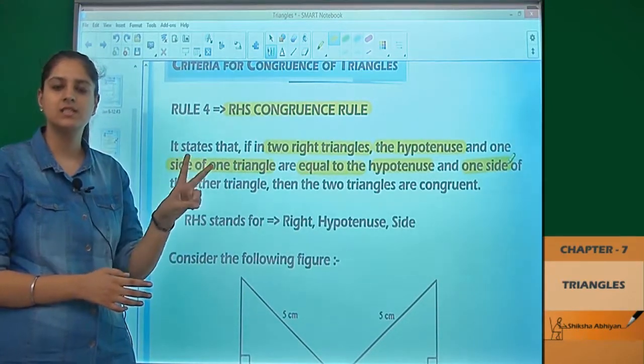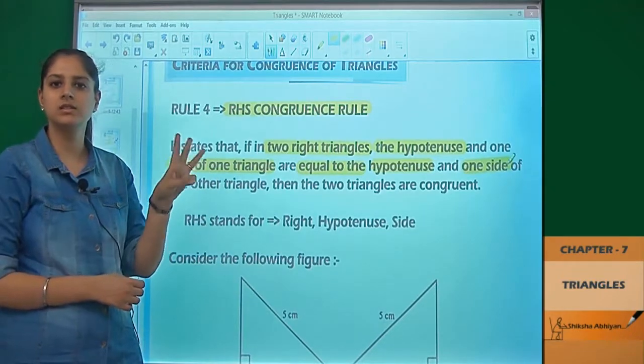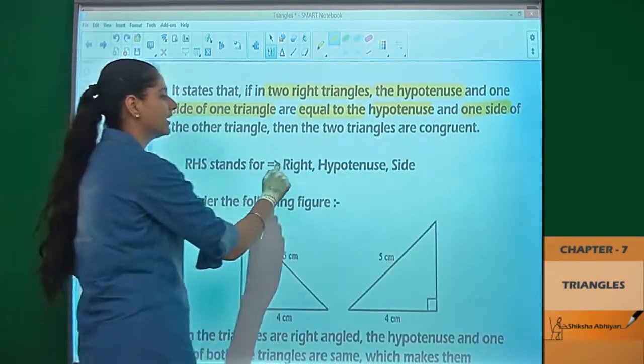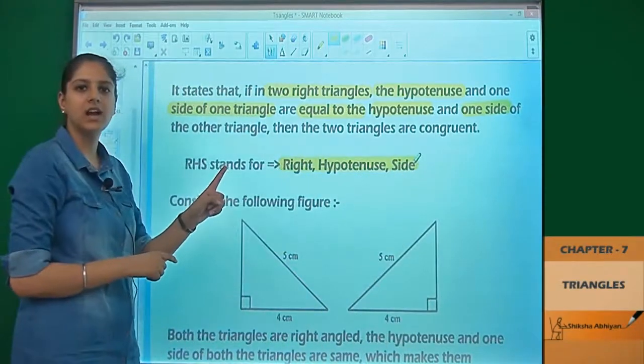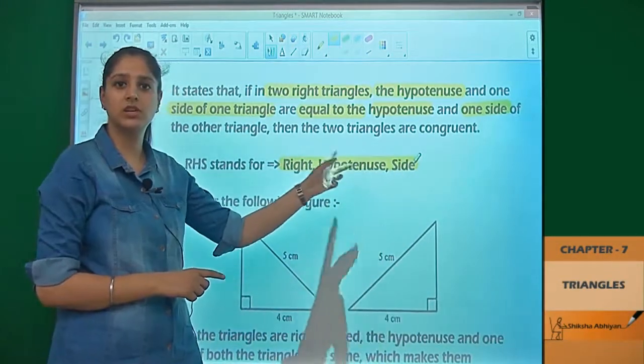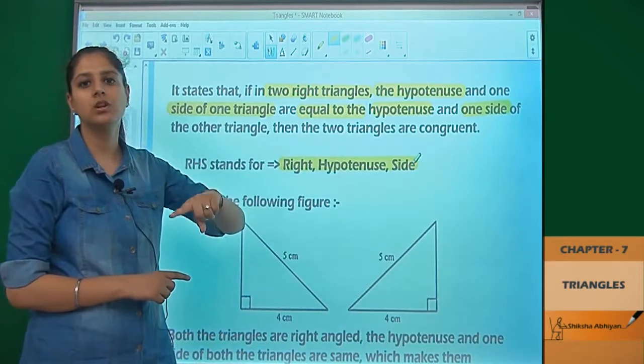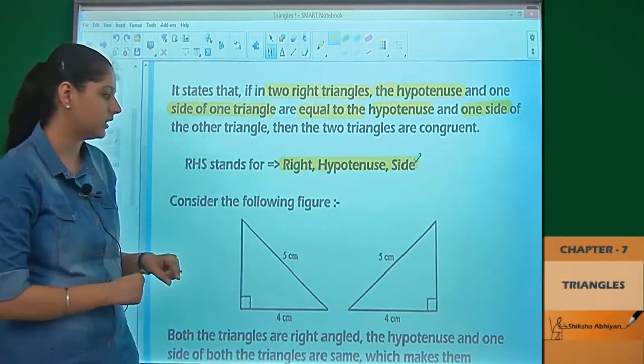First thing: right angle. Second thing: hypotenuse. And third is side. So RHS stands for Right, Hypotenuse, and Side. One triangle must have these three things, and the other triangle must also have the same things.